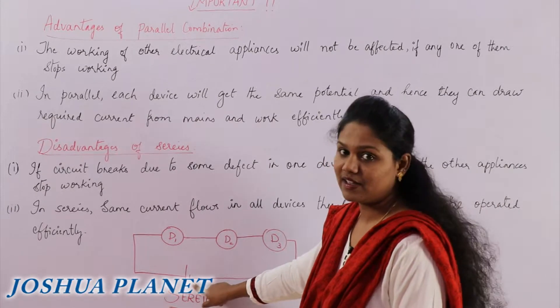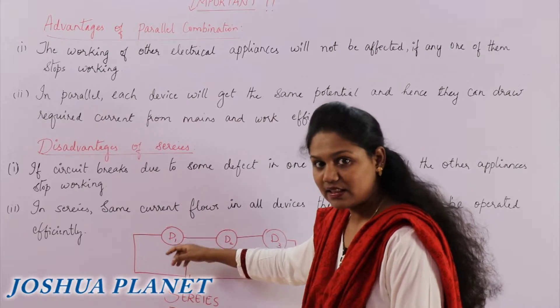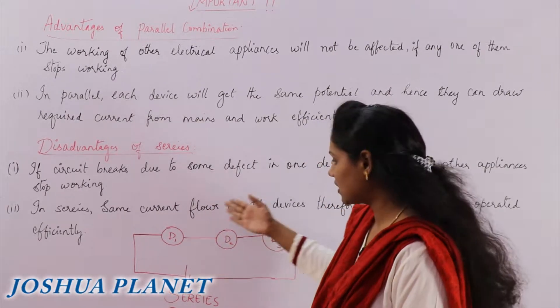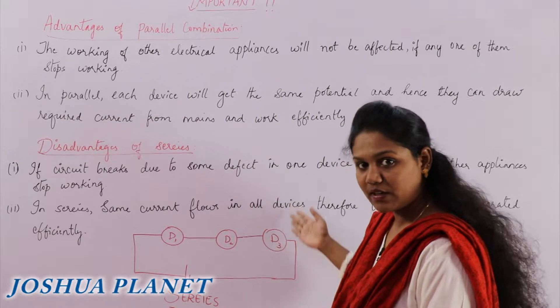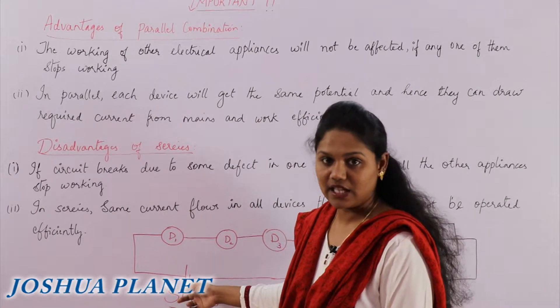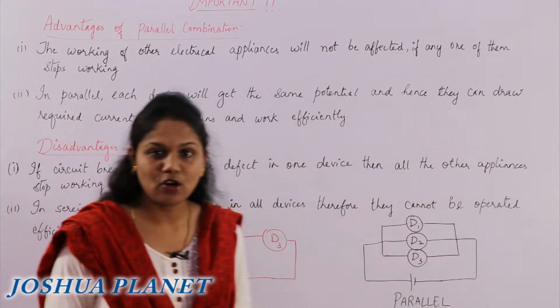So you are connecting here, I am connecting to a cell. So the cell is connected to device one and then the left out end of this device one is connected to device two and similarly device three and then the connection goes back to the cell. So this is called as series combination.